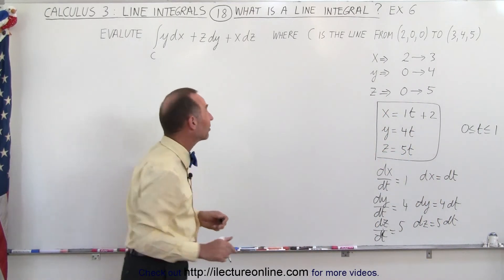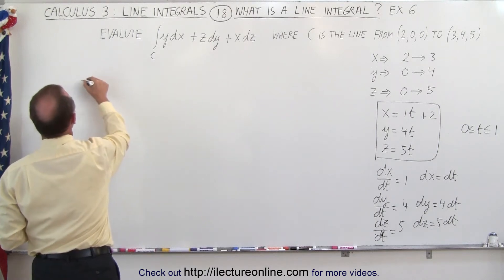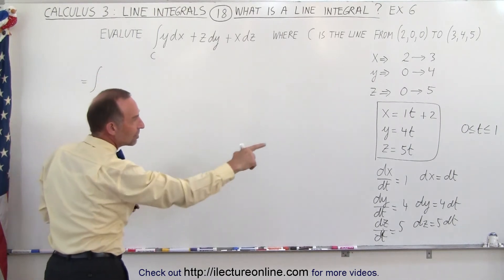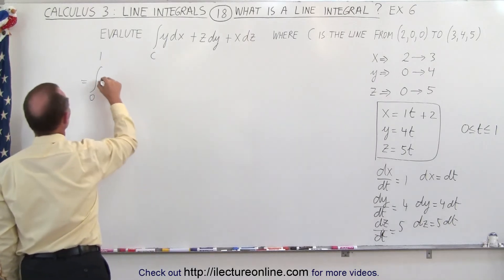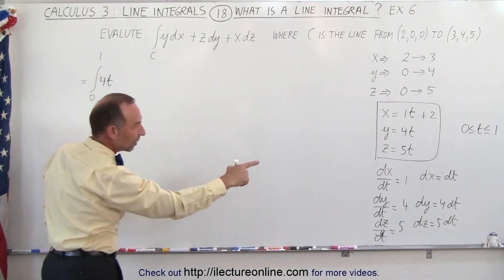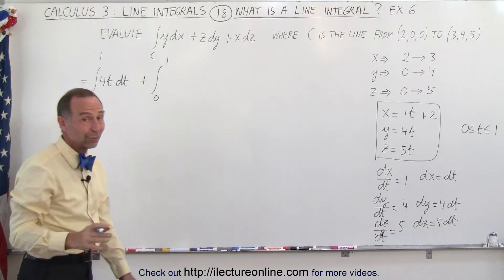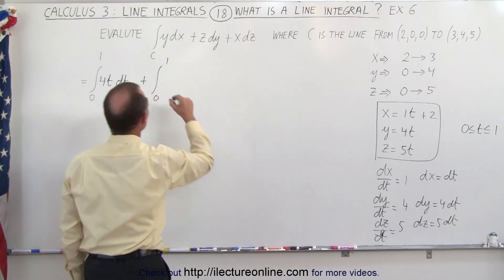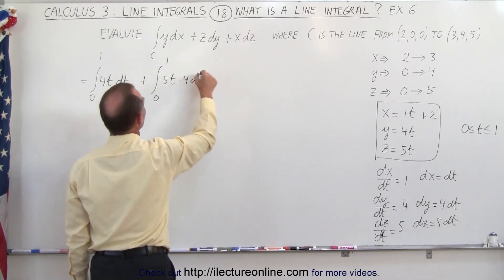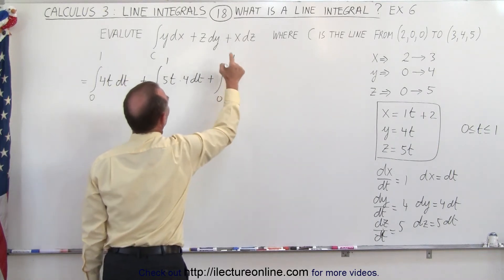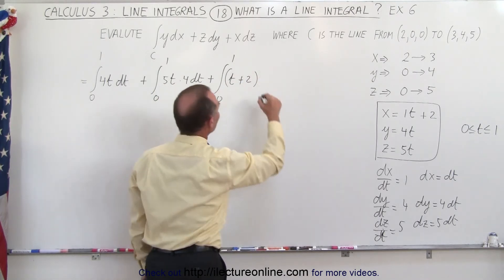So now we have everything we need to know to replace what's in here with the equivalent in terms of t. So now we can write this as follows. This can be written as an integral from t equals 0 to t equals 1 of y dx. And y is 4t, so we have 4t, and dx is going to be dt, plus the integral from 0 to 1, and it's probably better to write as three separate integrals. z is going to be 5t, and dy is going to be 4 dt, plus the integral from 0 to 1 of x dz, and x is going to be t plus 2, and dz is going to be 5 dt.